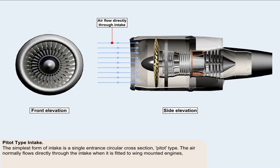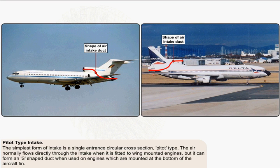The simplest form of intake is a single entrance, circular cross-section, pitot type. The air normally flows directly through the intake when it's fitted to wing-mounted engines. But it can form an S-shaped duct when used on engines which are mounted at the bottom of the aircraft fin, for example like the Boeing 727 or the Lockheed TriStar, which are shown here.